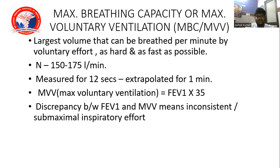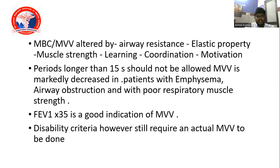Maximum breathing capacity or maximum voluntary ventilation (MVV) is the largest volume that can be breathed per minute by voluntary effort, measured for 12 seconds and extrapolated for one minute — approximately 150 to 175 liters per minute. MVV equals FEV1 × 35. MVV is altered by airway resistance, elastic properties, muscle strength, lung coordination. Testing periods longer than 15 seconds should not be allowed. FEV1 × 35 is a good indicator of maximum voluntary ventilation.